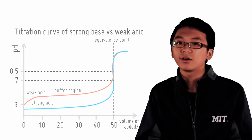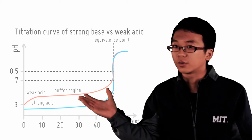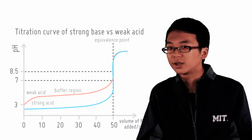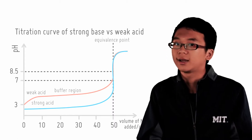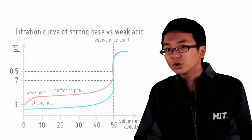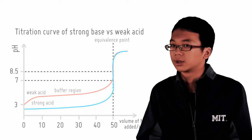Notice for both graphs that there is a point of inflection in the buffering region. And guess what? This point is actually where pH equals pKa, and it is an inflection point. You do not really need to know why because it's mostly mathematics.